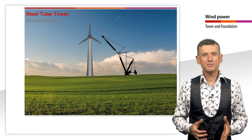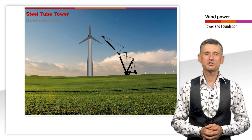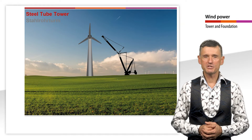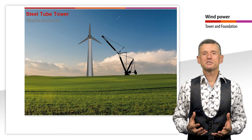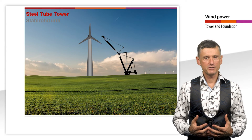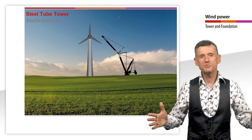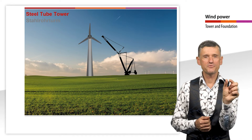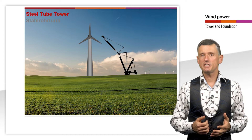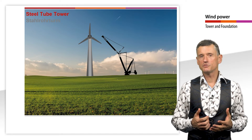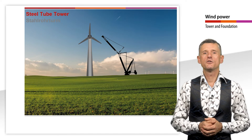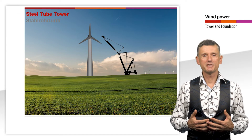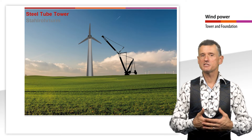The towers are manufactured and assembled in two different construction methods. In the standard construction method of bolted sections, the individual sections are prefabricated in the factory with lengths of up to 30 meters. The sections are made of 10 to 50 millimeter thick steel sheets. The sheets, which are about 2 meters wide, are rolled into a circular shape on a rolling mill. The tower section is welded together from these sections.